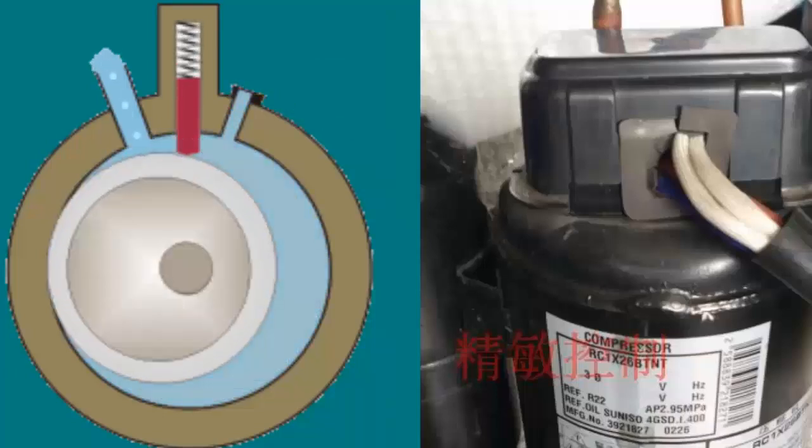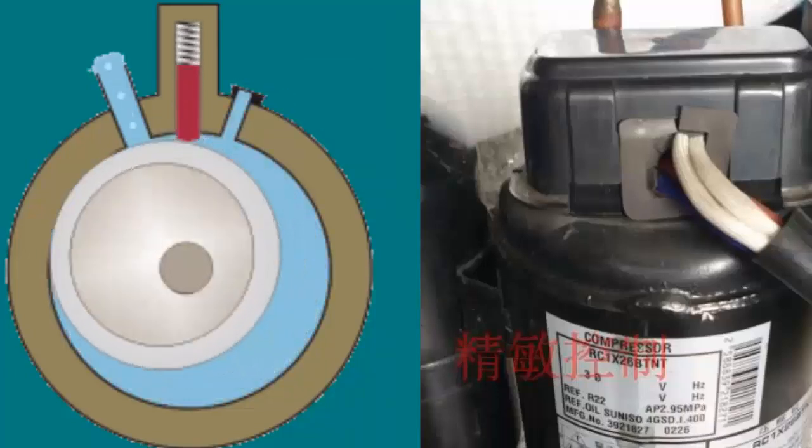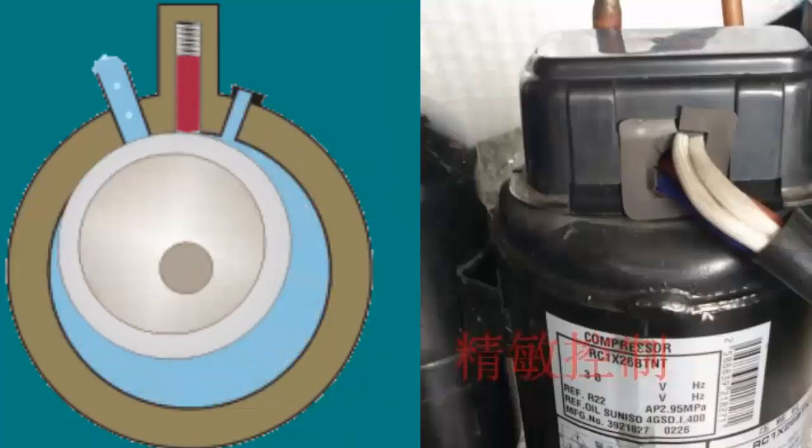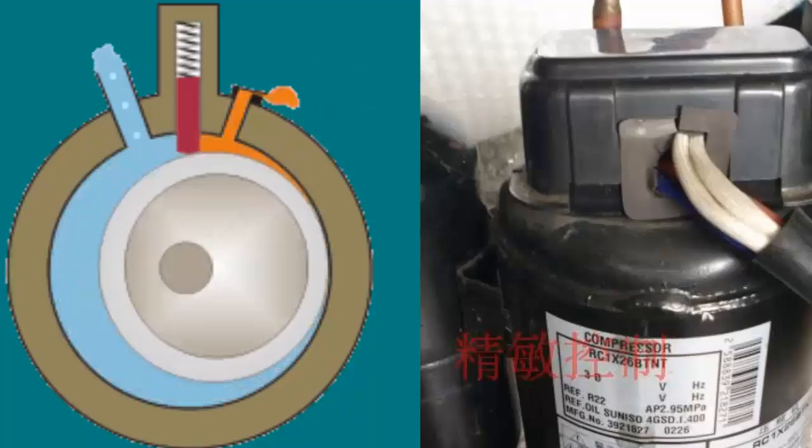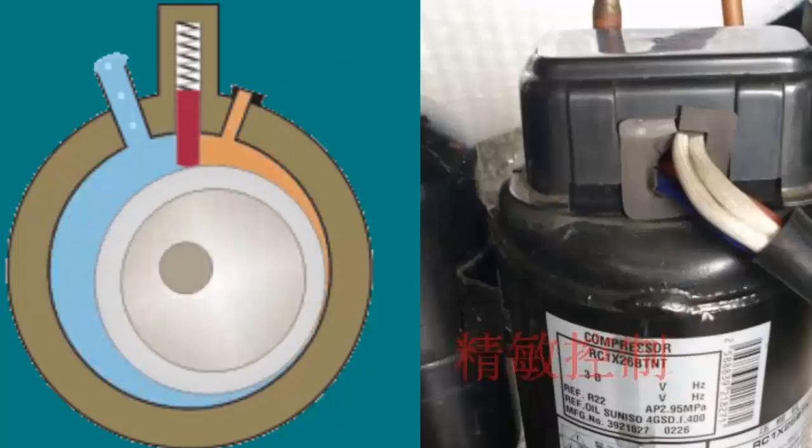In contrast, AC compressors generally operate at lower frequencies, typically between 30 Hz and 120 Hz, which means the compressor runs at lower RPMs.